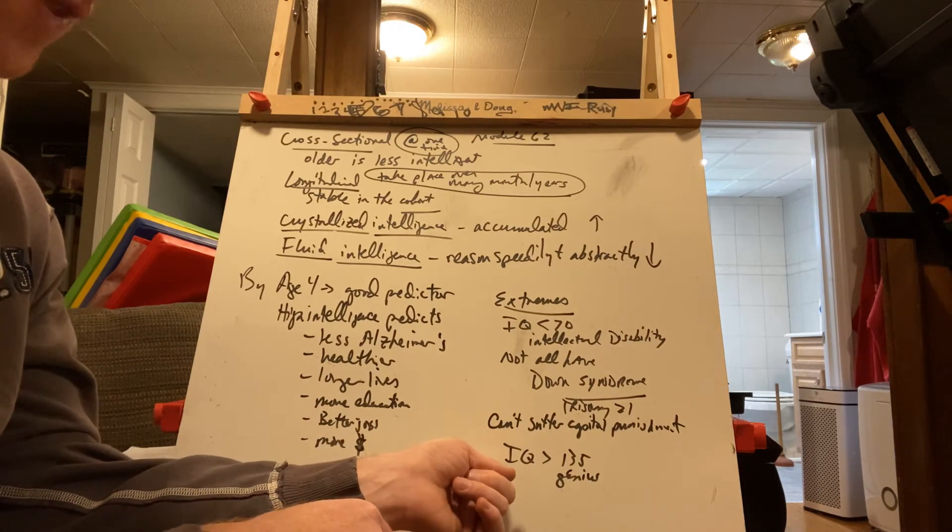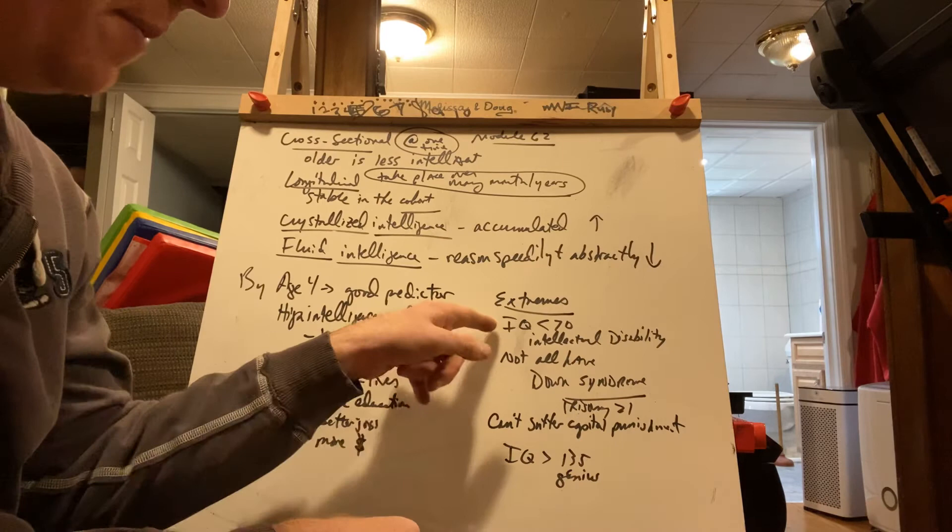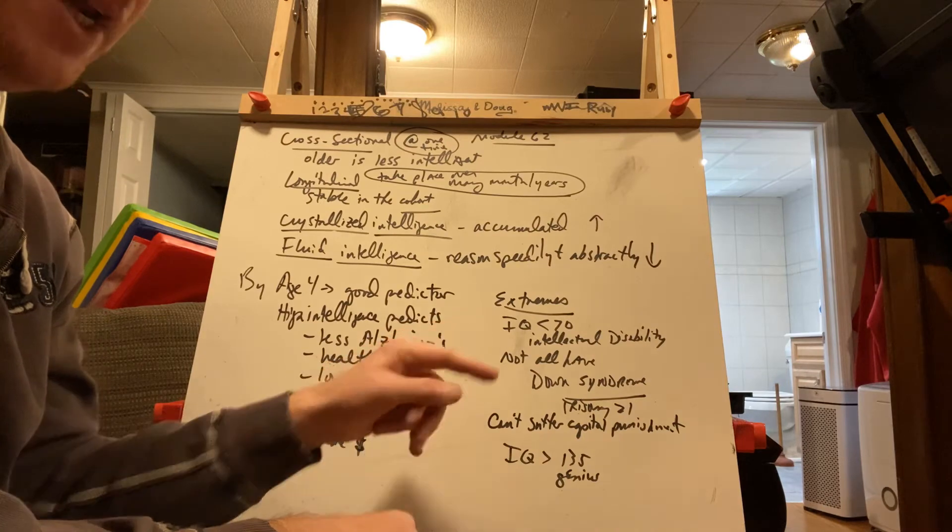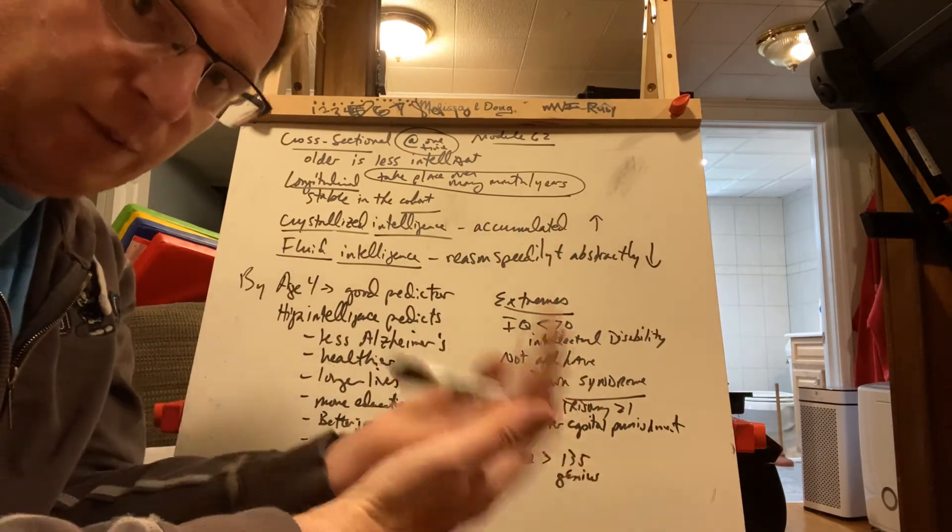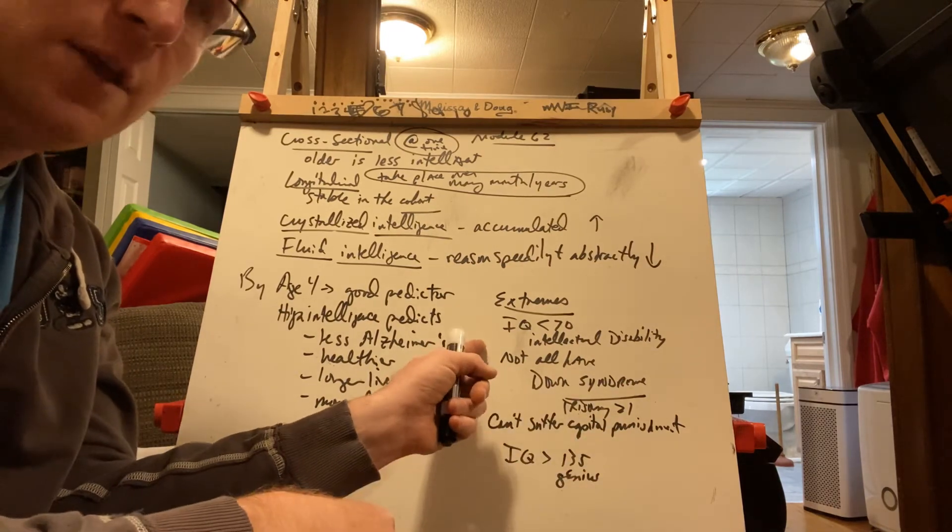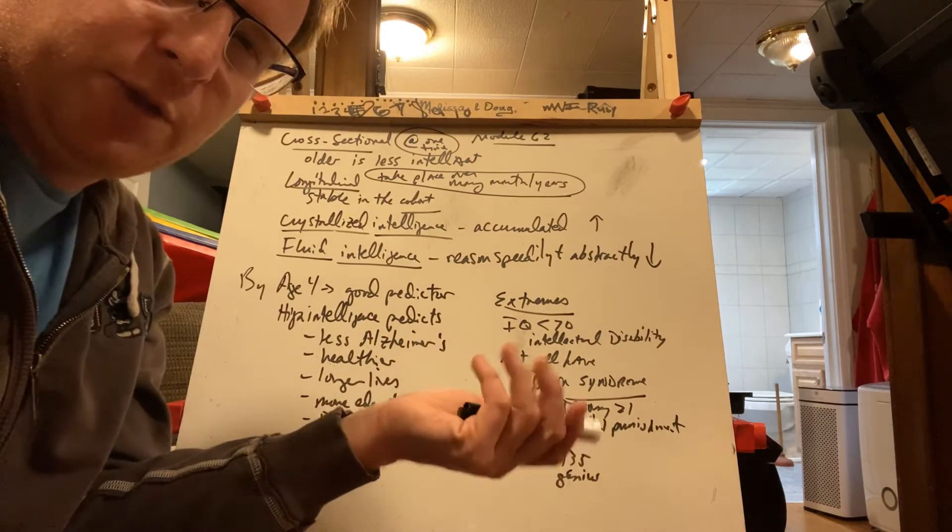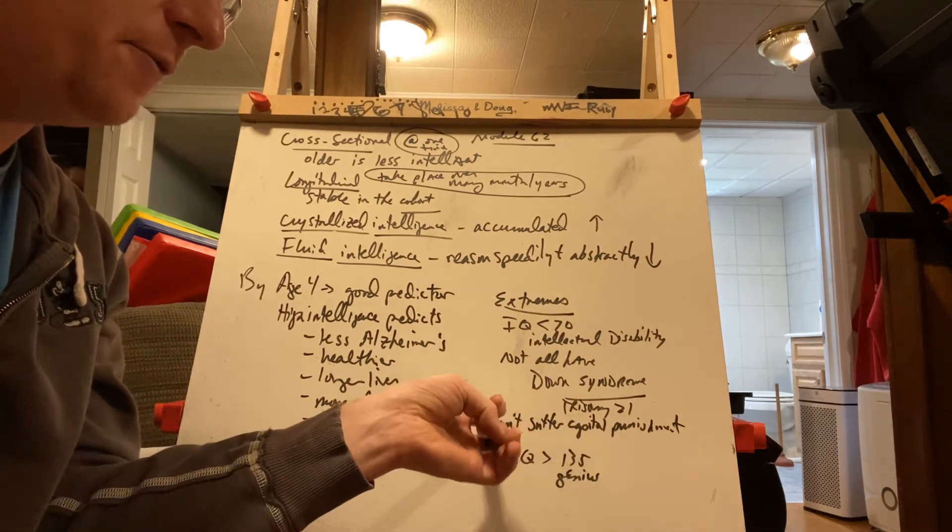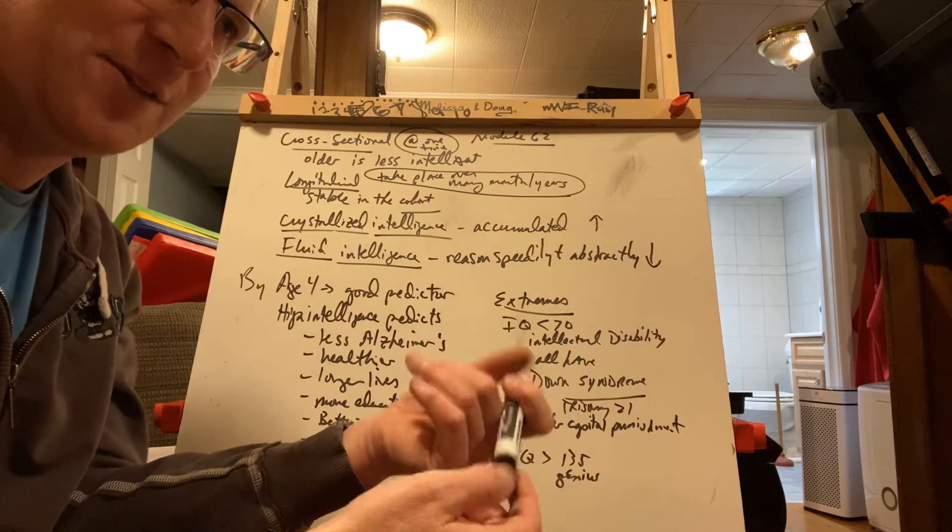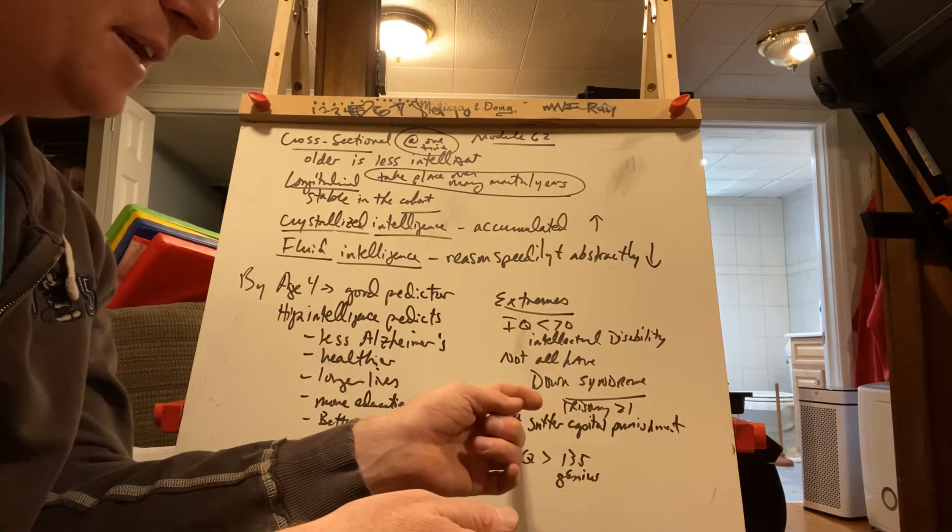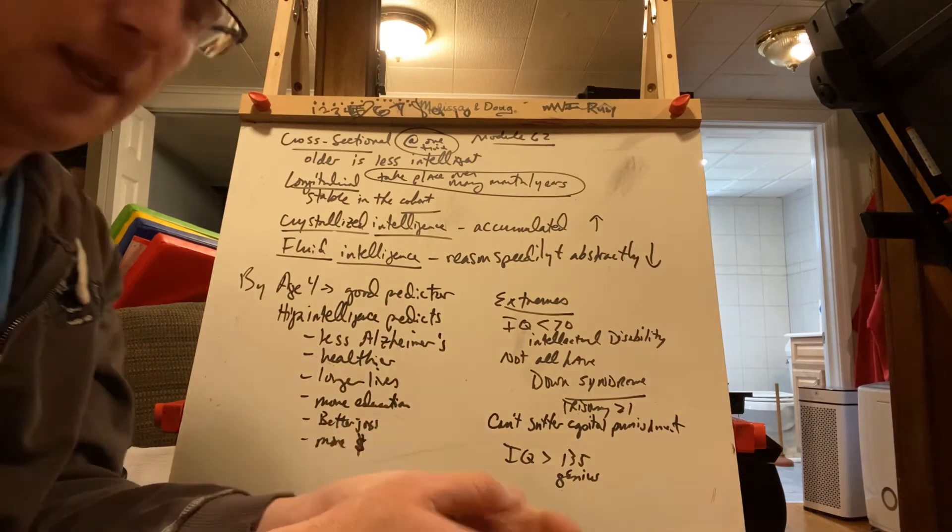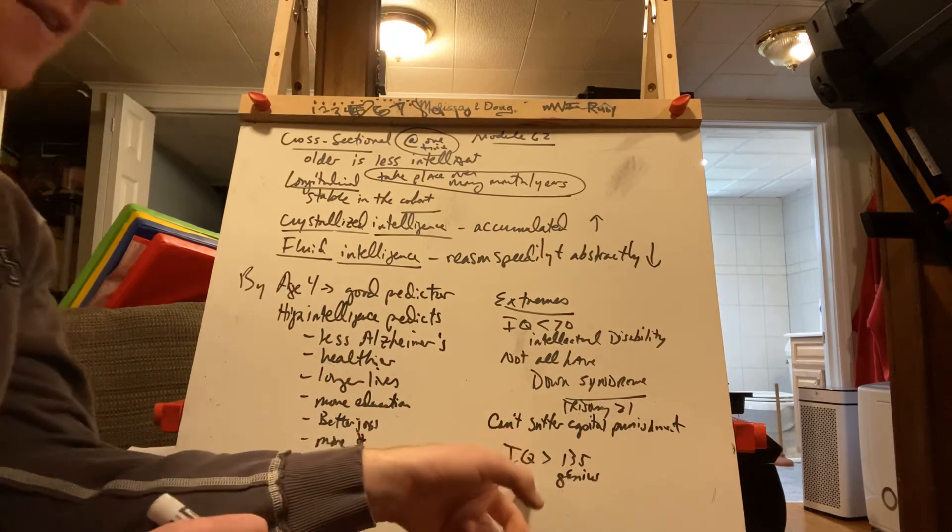If you have an IQ of 135 - oh, I should mention this first - that number 70 actually means something to criminals. If you commit a crime where you could suffer capital punishment, be put to death because your crime was so heinous, if you are below 70, they call it cruel and unusual punishment. You can't suffer capital punishment. It's interesting that if somebody has an IQ lower than 70, they can't put you to death.